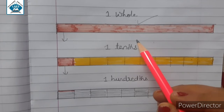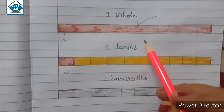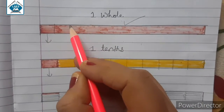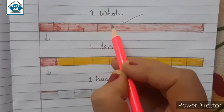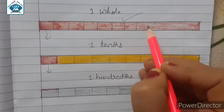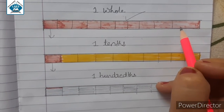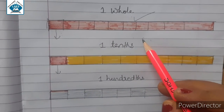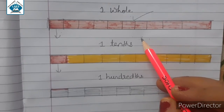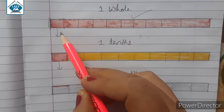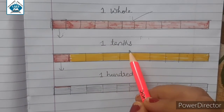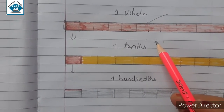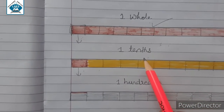Now let me divide this whole part into 10 equal parts. Let me draw the lines — 1, 2, 3, 4, 5, 6, 7, 8, 9, and 10. So imagine these are all 10 equal parts. This one part is known as one tenths part. Each part is known as one tenths part, and at the bottom side you can see it labeled as one tenths.